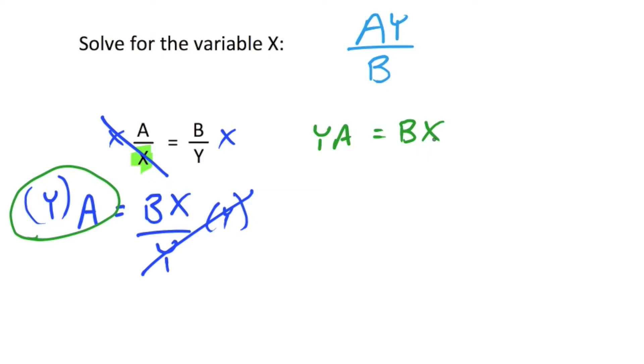So, we have to get x by itself, so we're going to divide each side by b to get rid of that b. The b's cancel out, we're left with y a or a y, doesn't matter what order it is, divided by b.